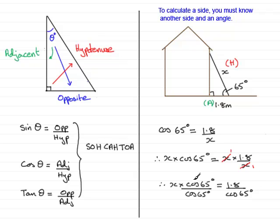Now, on the left hand side, this would reduce down to simply x, because these two cancel one another out, giving me 1. x times 1 is just x. So, now I'm in a position to work out what x is. x is the result of dividing 1.8 by the cosine of 65 degrees.